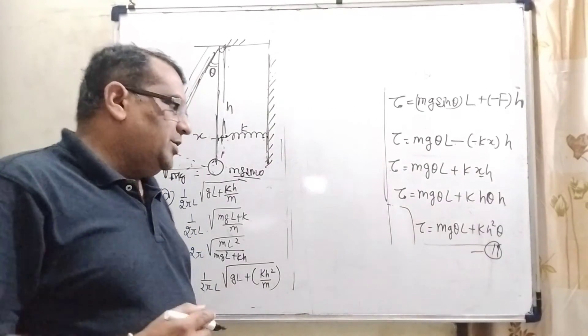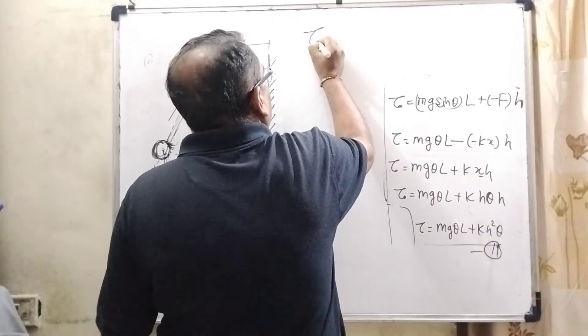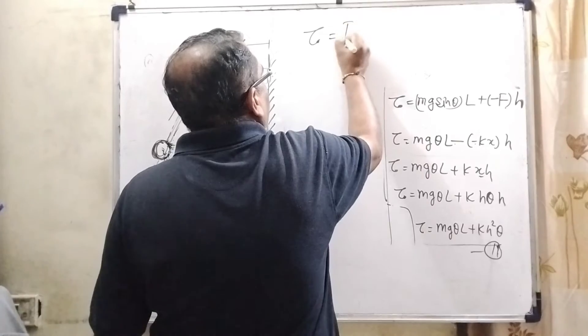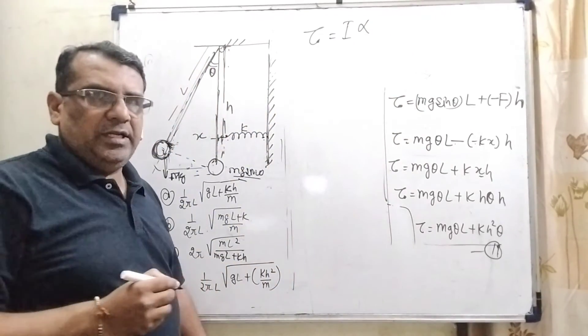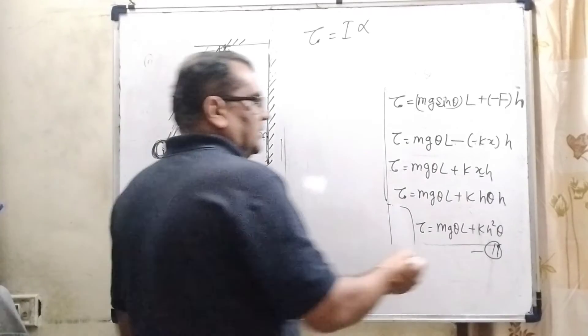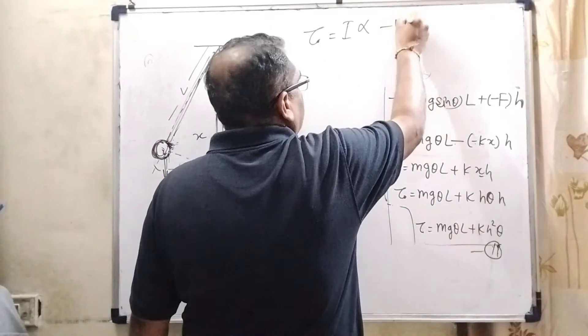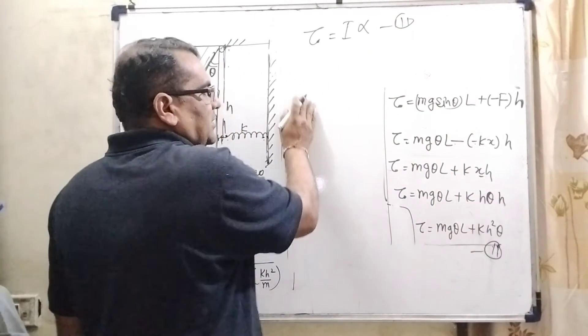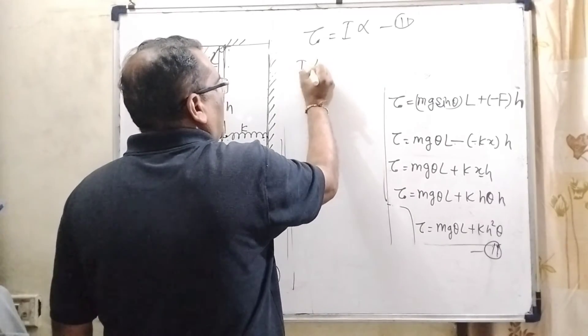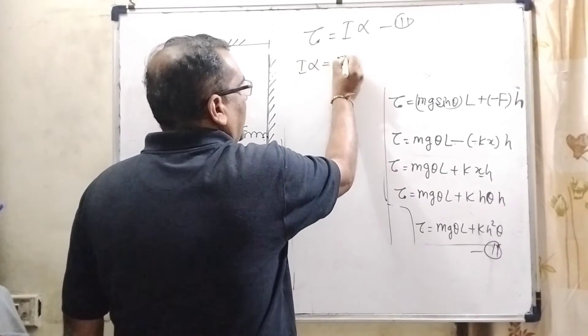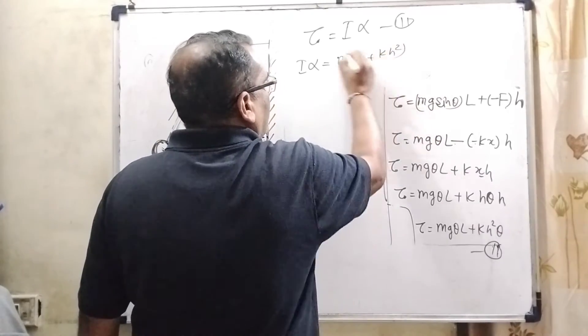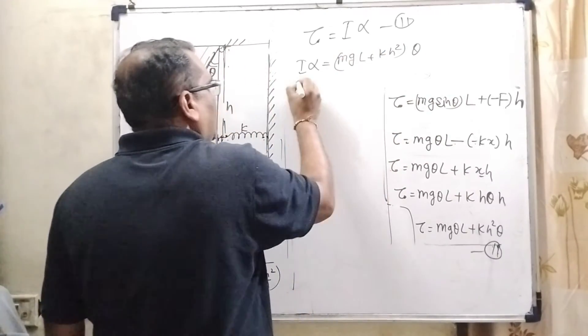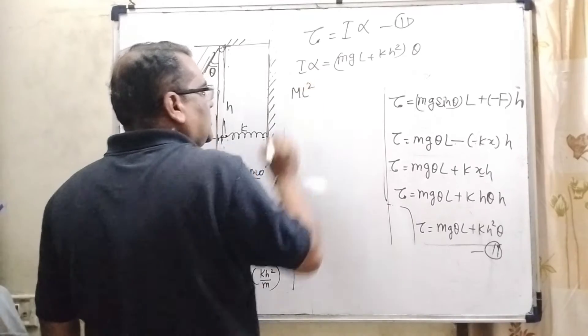Now, we know that tau can be written as also moment of inertia and alpha. Alpha is angular acceleration. And if we have considered second equation that is this third equation by comparing second and third that is I alpha is equal to MGL minus KH square and theta get common.